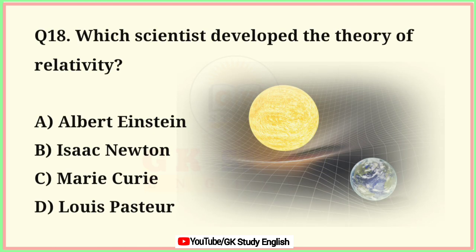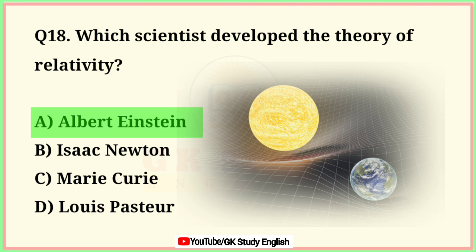Question number 18. Which scientist developed the theory of relativity? A. Albert Einstein. B. Isaac Newton. C. Marie Curie. D. Louis Pasteur. Correct answer is option A. Albert Einstein.